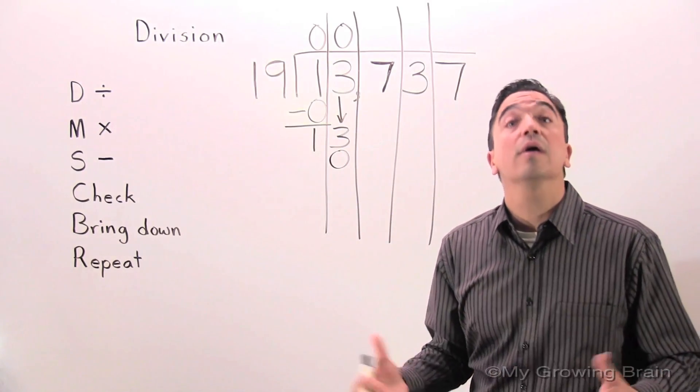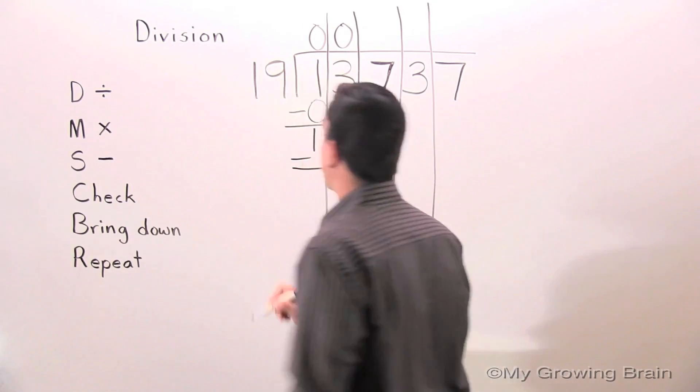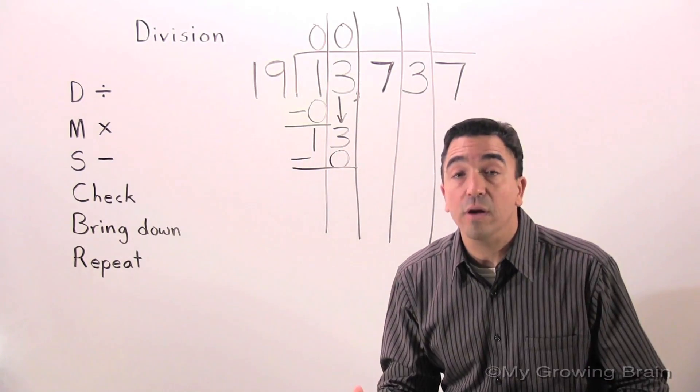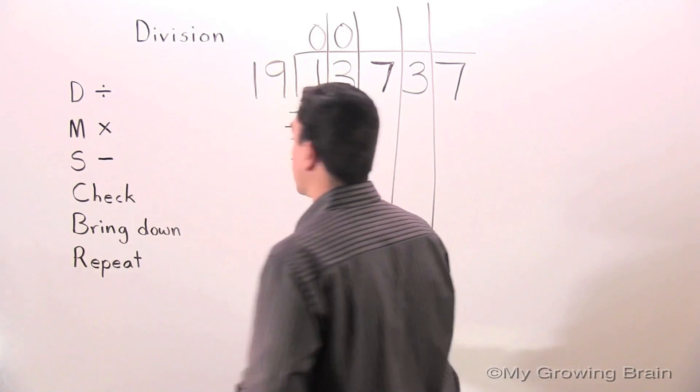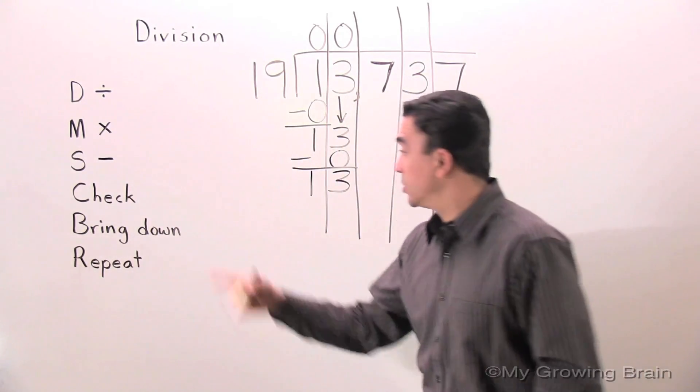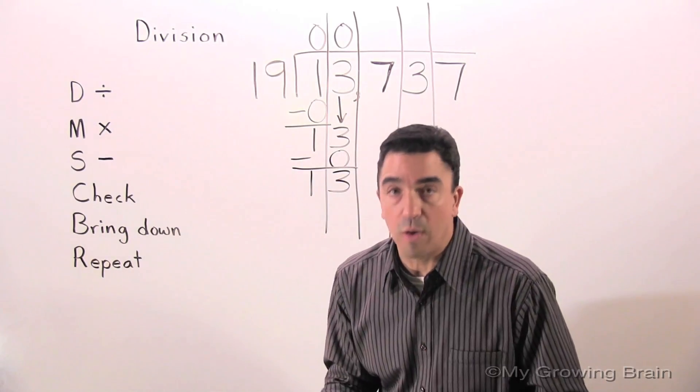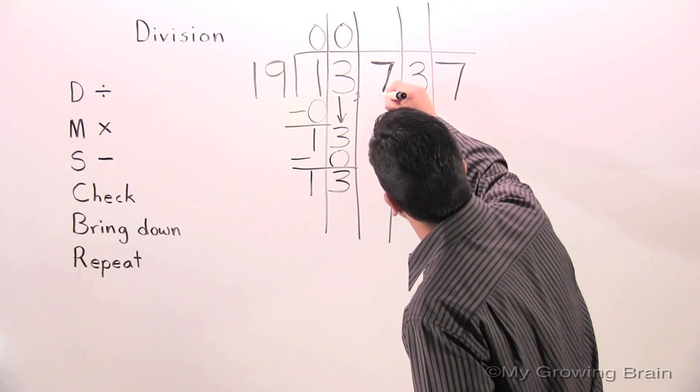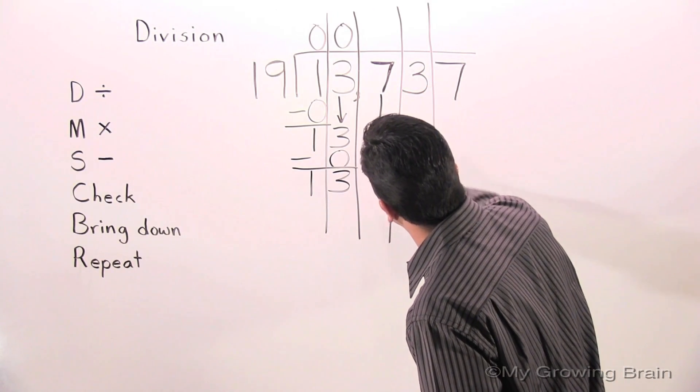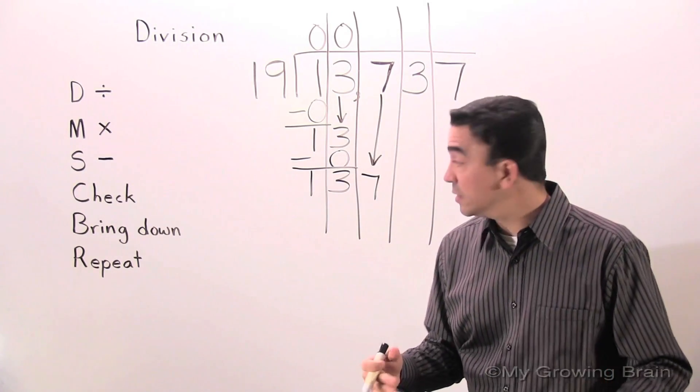Next step. Subtract. 13 minus zero, 13. Next step. Check. 13 is less than 19. Keep on going. Next step. Bring down. 137.